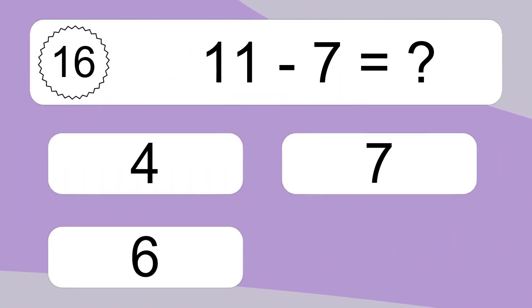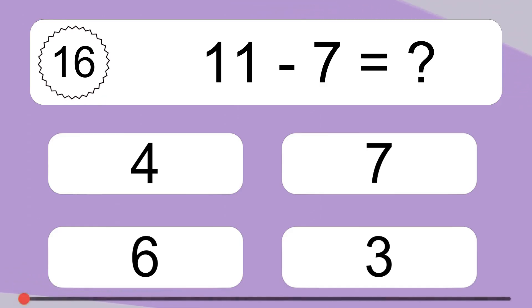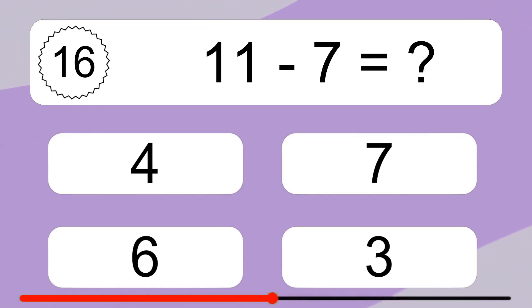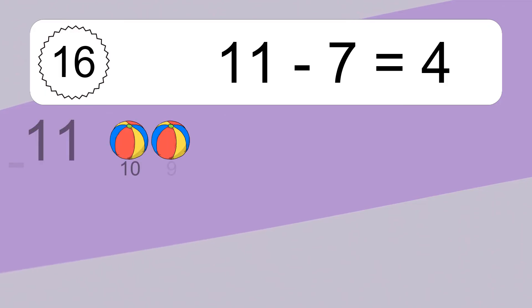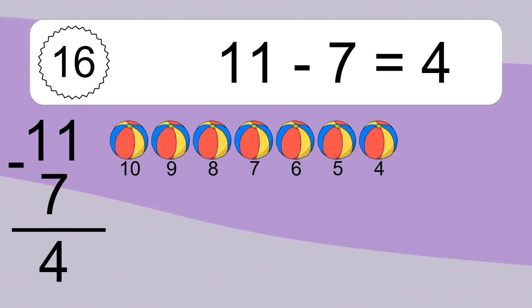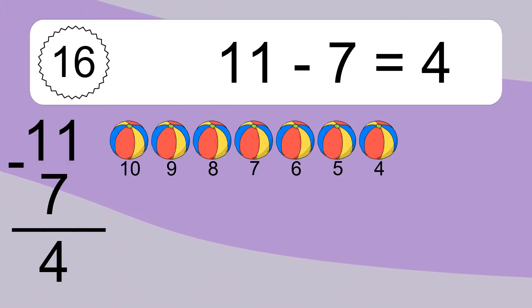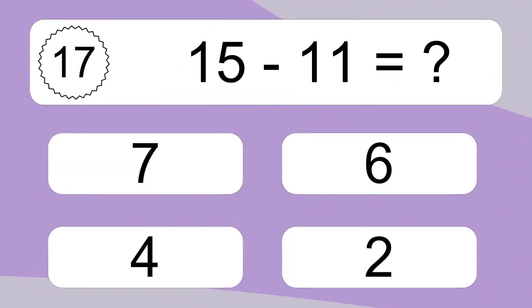11 minus 7 equals what? 11 minus 7 equals 4. Let's count it: 10, 9, 8, 7, 6, 5, 4.